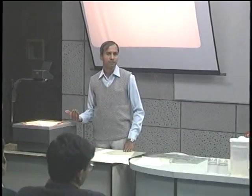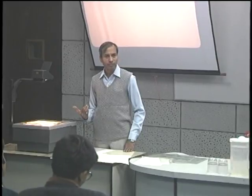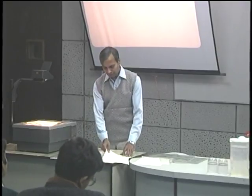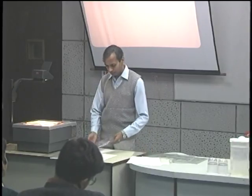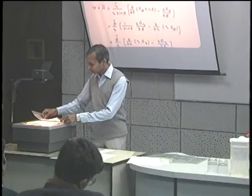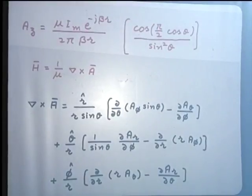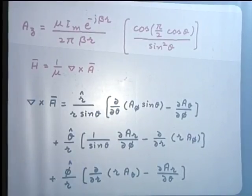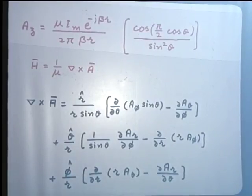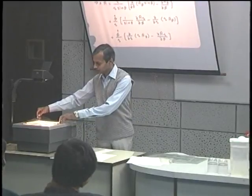Some terms are always present when we calculate the vector potential in this far-field approximation: the e^(−jβr) term, the 1/r term, and the strength of the current. Then there will be an expression that is a function of theta — this is what is involved in the radiation pattern. That is as far as the evaluation of the vector potential is concerned. The next step is the calculation of the magnetic field intensity, requiring the spherical coordinate components of the vector potential — but let us keep that for the next lecture.